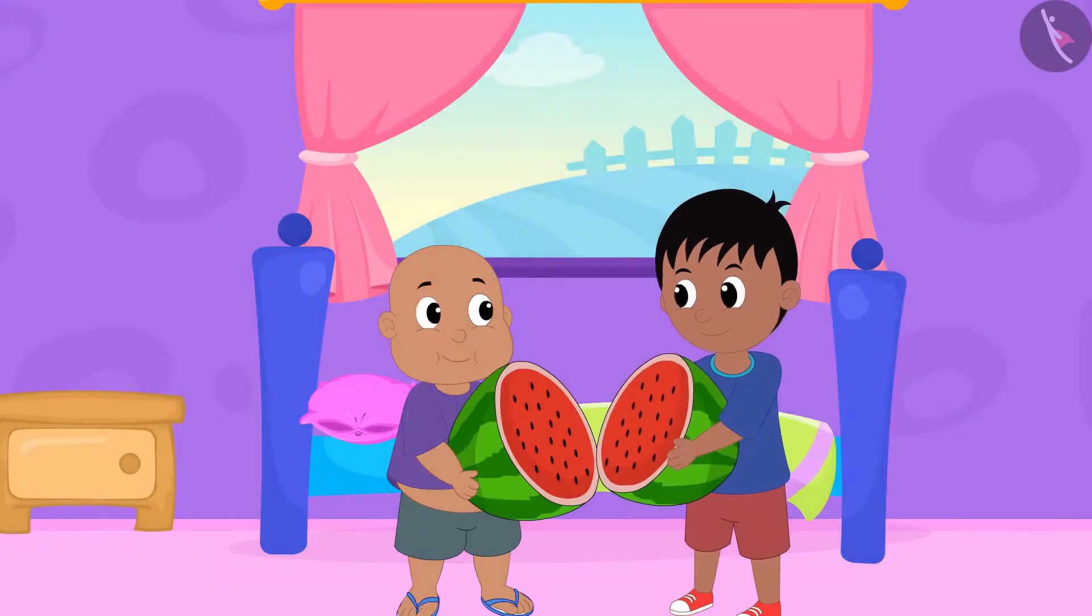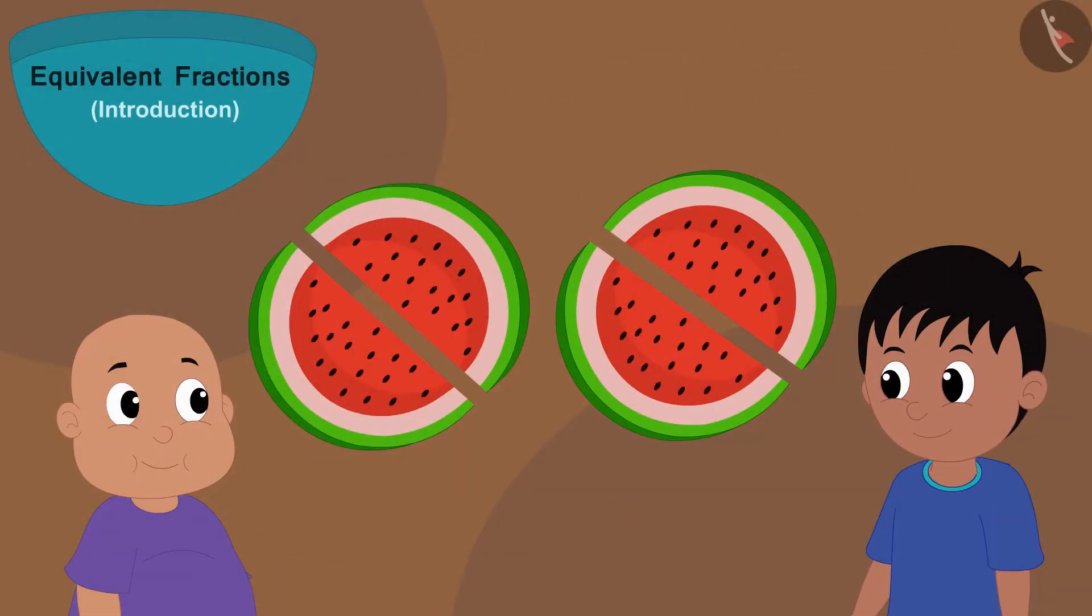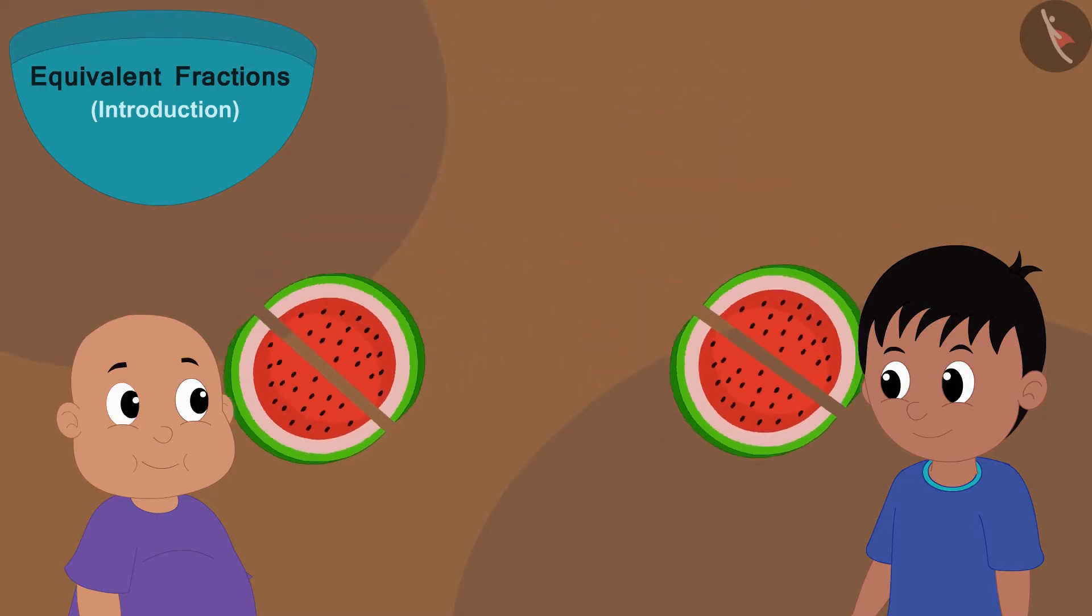Raju told Bablu that this portion is too big and he cannot eat it. So, Raju cut those two big pieces into two equal parts. In this way, now the watermelon has four equal parts. Bablu gave two parts of them to Raju.